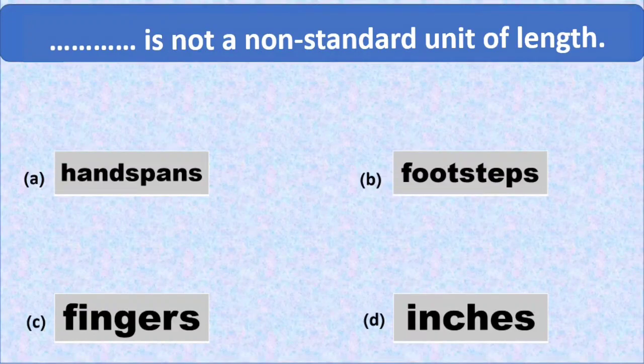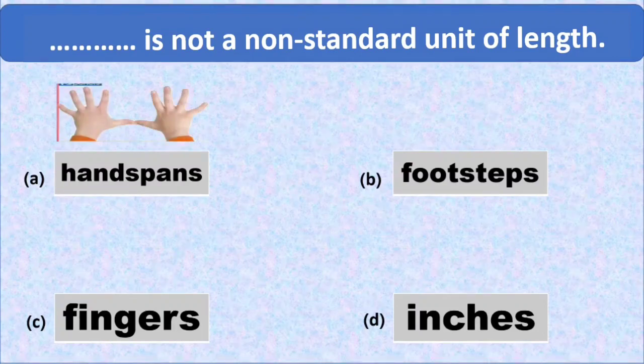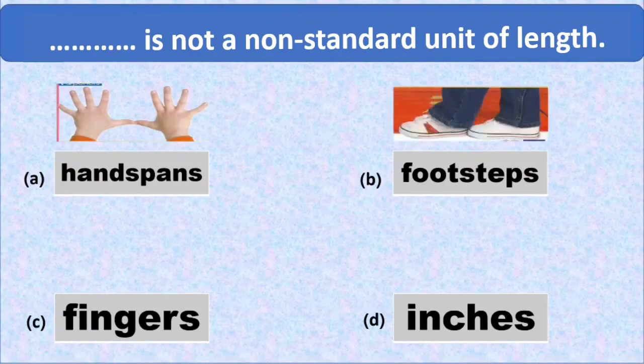Option A is hand span. Here we have an example of a hand span. We know that we can't correctly measure length with hand span. Everyone has a different length of his hands, so the hand span changes from person to person. Measurement is not same with different hands, so it is a non-standard unit.